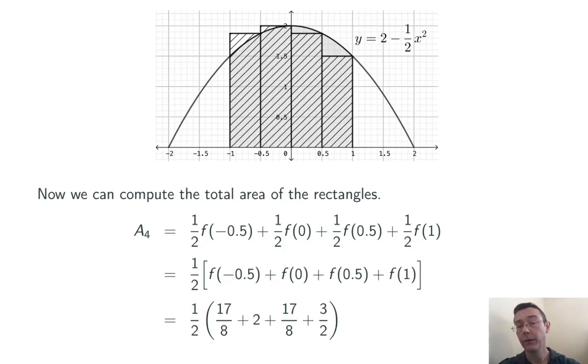Now I plug those values into the function and simplify. I get that the cross-hatched region has area 3.625. That's going to be an approximation of the shaded region.